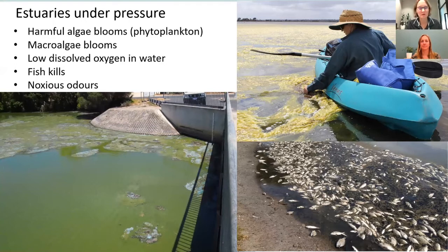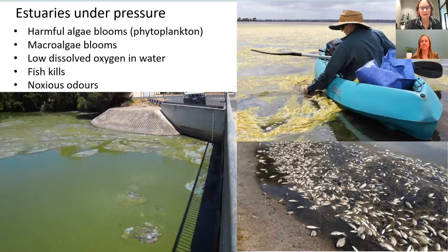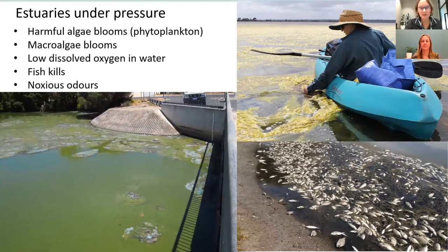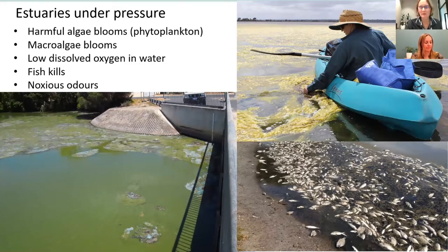In the Vasse Wonnerup estuaries we can see discoloured, thick green, smelly water caused by high concentrations of algae or phytoplankton — small single-celled organisms that grow in abundance when nutrient concentrations are high. Sometimes those phytoplankton produce toxins and are referred to as harmful algal blooms. We also have macroalgal blooms — thick accumulations of weed. Both algal and macroalgal blooms are driven by high levels of nutrients, typically nitrogen and phosphorus, which provide the food these organisms need to grow.